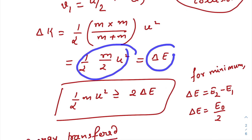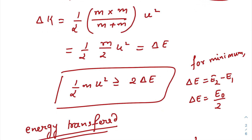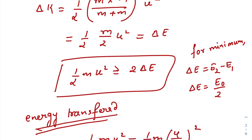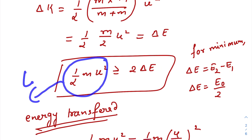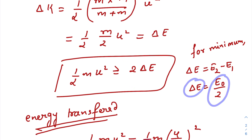The minimum kinetic energy, after rearranging, should be twice the energy gap between the first excited state and the ground state. According to our question, this value is E₀. So E₀ equals 2·ΔE, meaning ΔE = E₀/2. We need to remember this for the rest of the question.